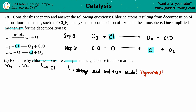That's what a catalyst is — it's always used up first, and then it is made. In order to see this on a mechanism: the using up means it's always going to be on your reactant side first. So a catalyst is always going to be on the reactant side first. And then if you make it, you always make your products, so it will appear on the product side last. The chlorine in step two is on the reactant side.